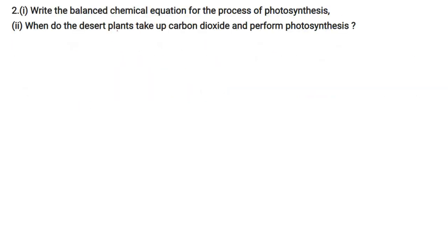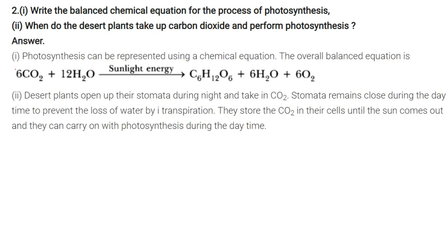Write the balanced chemical equation of the process of photosynthesis. Photosynthesis can be represented as: 6CO2 + 6H2O, in the presence of sunlight, forms C6H12O6 (glucose/starch) and 6O2. This is a balanced equation: 6, 12, 6, 6.